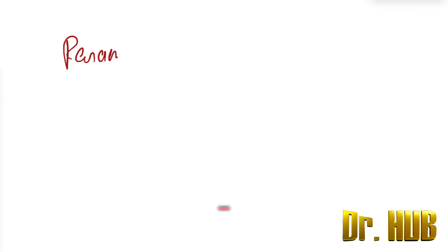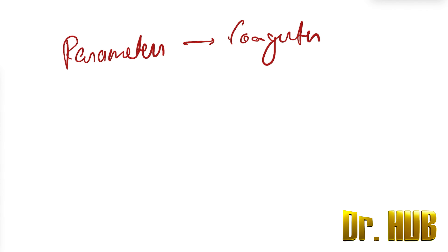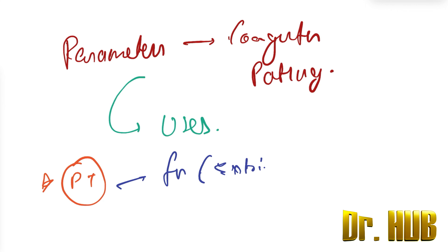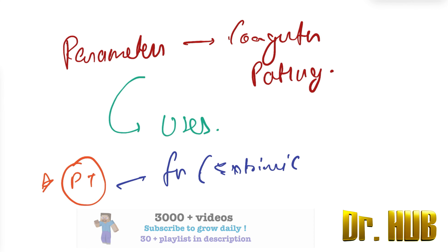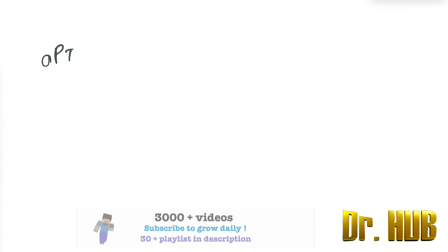Today we will look at the parameters of the coagulation pathway. First, we are going to look at PT, which stands for Prothrombin Time. It is used to monitor the functioning of the extrinsic and the common coagulation pathway. The normal PT ranges from 12 to 16 seconds.